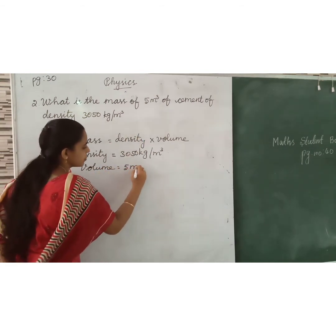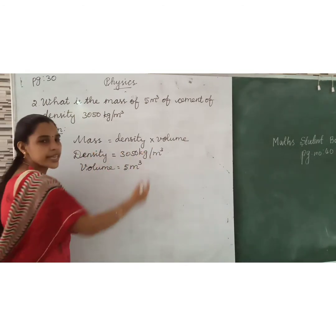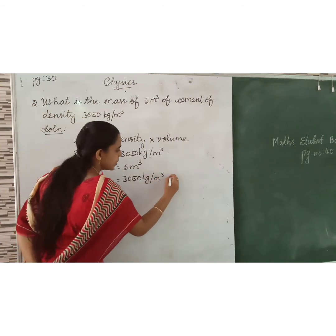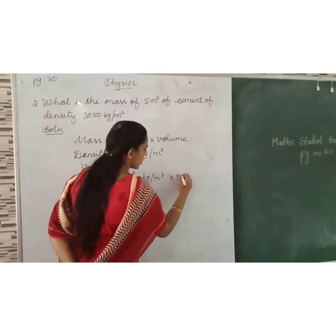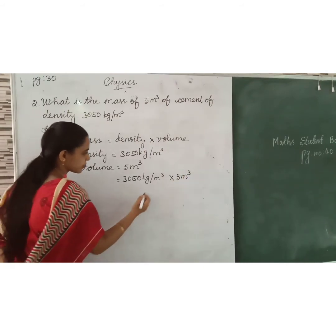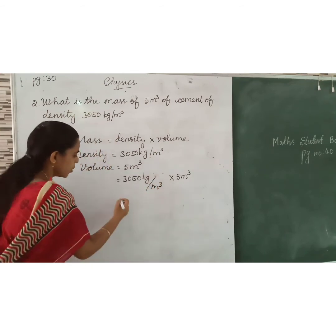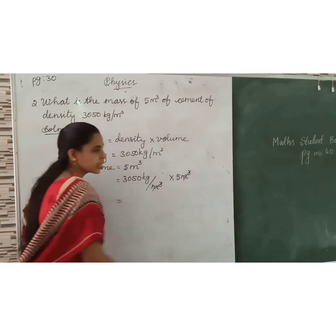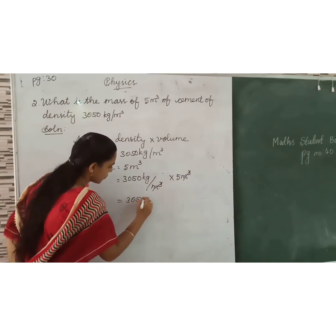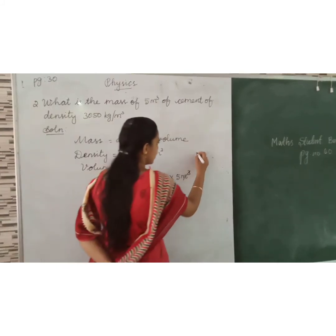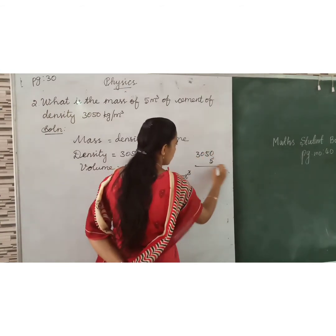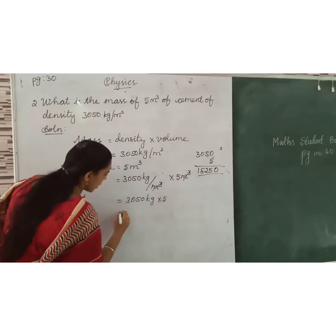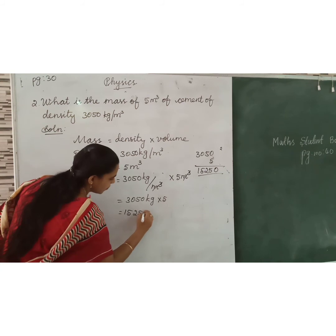Volume is equal to 5 meter cube. So, mass = density × volume = 3050 kg/m³ × 5 m³. The meter cube units cancel out. Multiplying: 3050 × 5 = 15,250 kilogram. The answer is 15,250 kilogram.